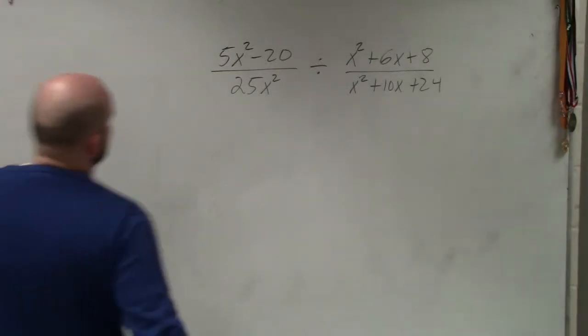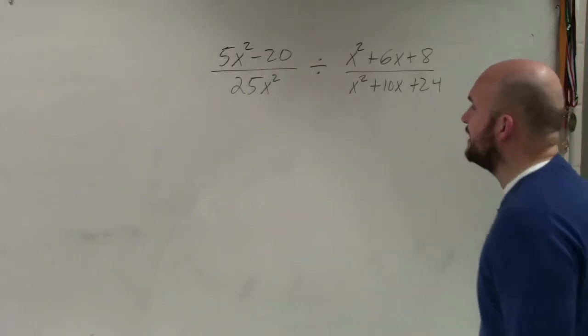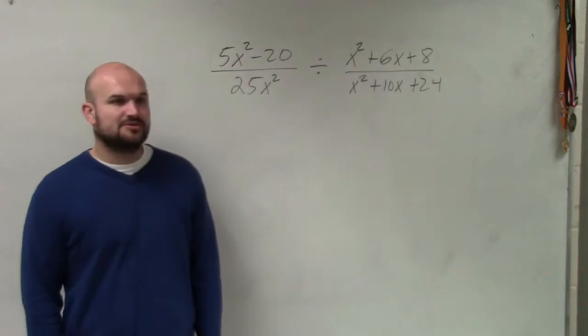OK. So the first thing, ladies and gentlemen, is we have 5x² - 20 divided by 25x², divided by x² + 6x + 8, divided by x² + 10x + 24.